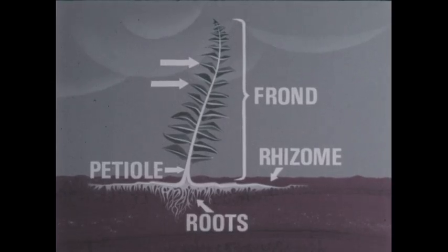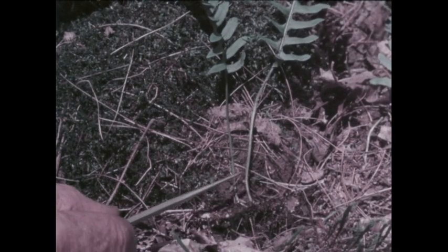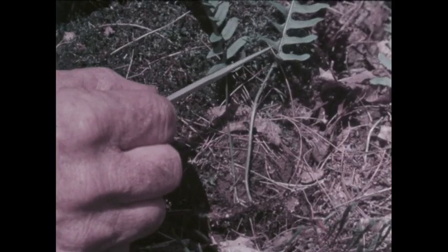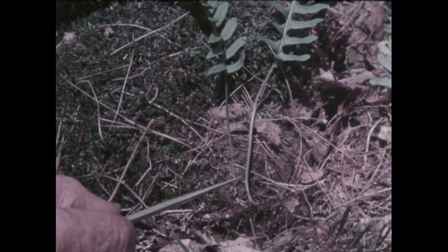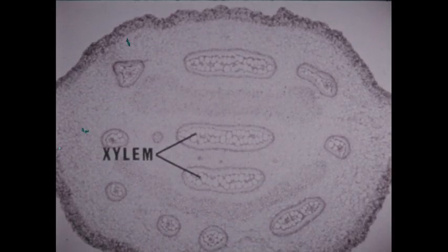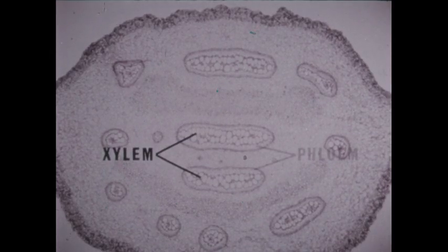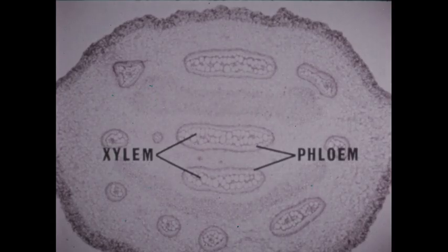Roots are more complex than the rhizoids of a liverwort. In a fern's roots, stem, and petiole, we see an evolutionary advance that distinguishes ferns from bryophytes. Cutting a petiole longitudinally reveals a vascular system that conducts water, dissolved minerals, and food to and from the frond. A cross-section cut of a rhizome reveals that the vascular system has two kinds of tubes: those that make up xylem, vascular tissue that carries materials toward the frond, and those that comprise phloem, tissue that carries materials away from the frond.